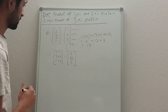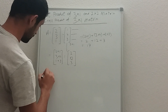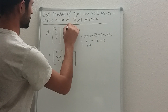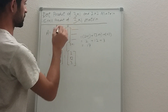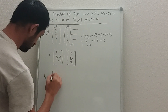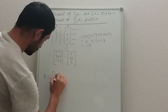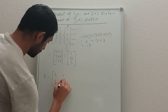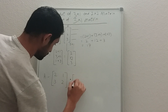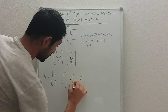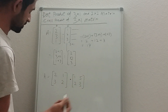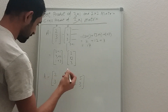Now the second example — this is matrix A and this is matrix B, so we write A dot B. We have a two-cross-two matrix: A is two, one, three, two and B is one, five, two, three.